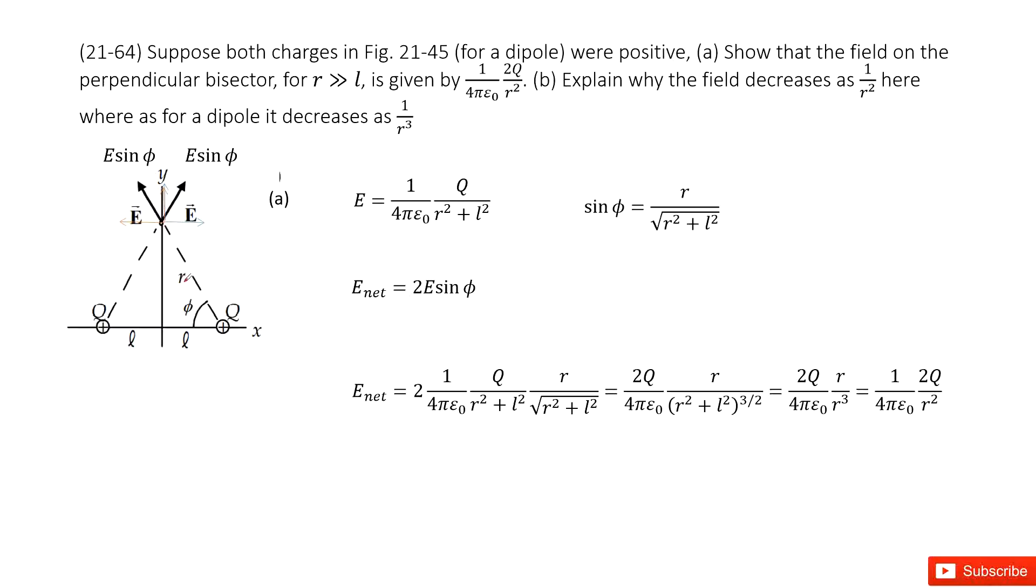So we have a dipole that includes two positive charges with charge Q. We need to find the electric field at this location, which is a distance R along the x-axis. This side is R, and the distance from the origin to the dipole is L.